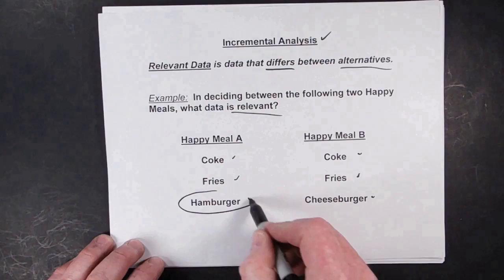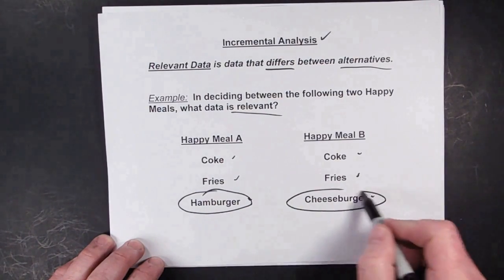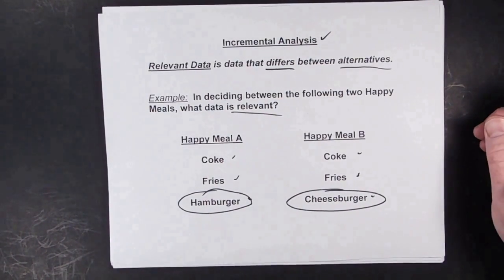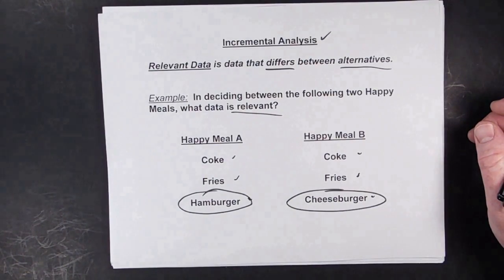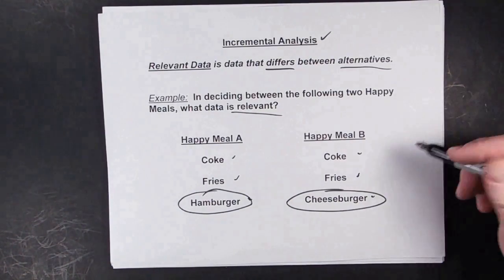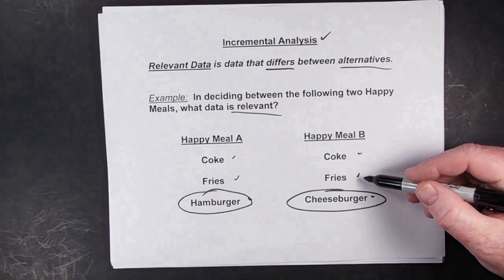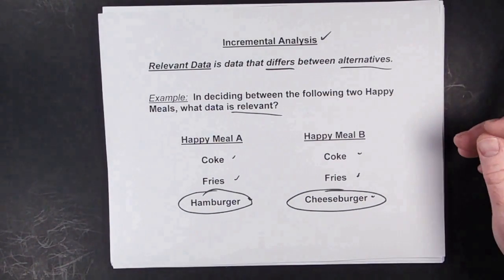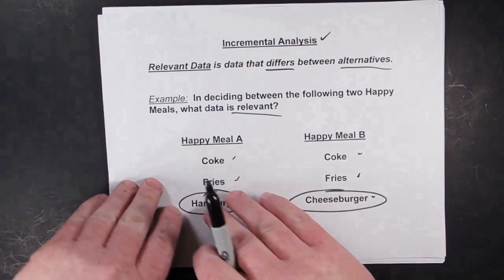So the only thing that's really relevant is the hamburger or cheeseburger. The Coke and fries are actually not relevant because either way you're getting those. We're not saying that they don't exist, we're not saying we don't want to pay for them or don't want them — we're just saying that for the decision, they're not relevant.